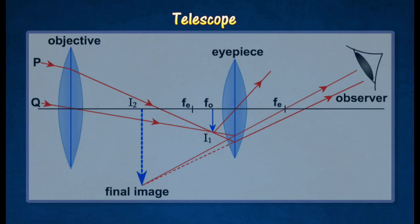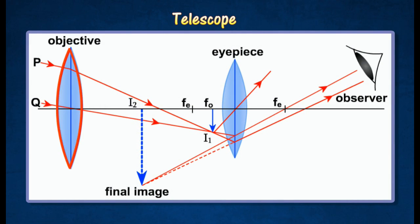It consists of two convex lenses. The objective lens whose power is low has a long focal length FO. The eyepiece whose power is high has a short focal length FE. Thus, focal length of eyepiece FE is less than focal length of objective lens FO.